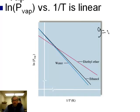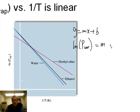What's the equation of a line? The equation of a line is y equals mx plus b. So in that case, we could say, since y is natural log of vapor pressure, that's equal to a slope, m, times x, which in this case is 1 over temperature, plus b, some constant.